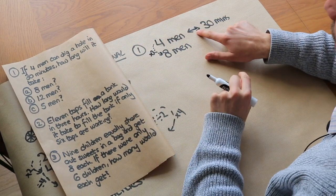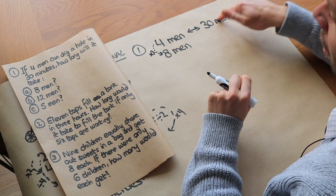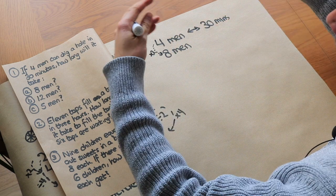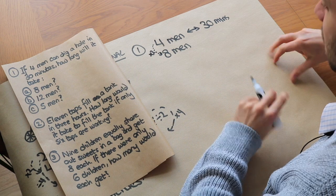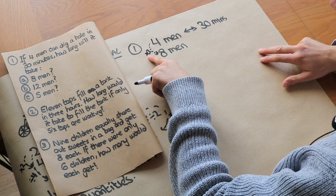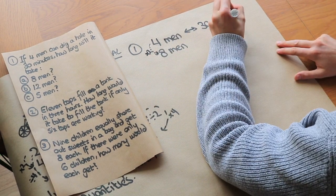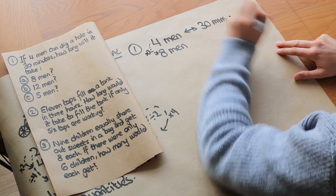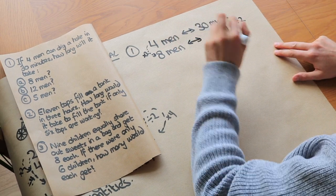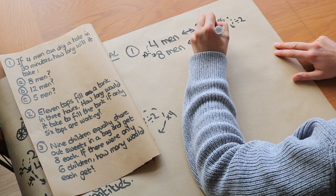And because it's inversely proportional, if we double the number of men, it takes half as much time, because you've got more men doing the job, so it's going to take less time to do. So that means if you times the number of men by 2, you divide the amount of time by 2. So 30 divided by 2 is just 15 minutes.